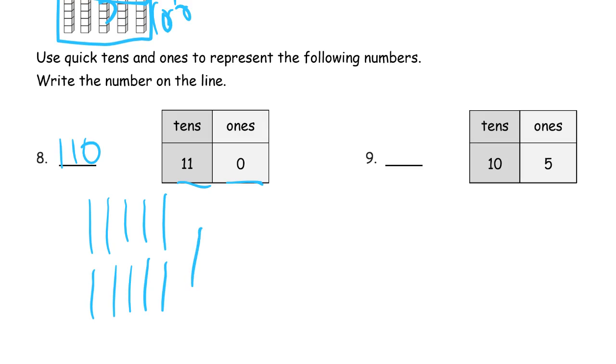And here we have 10 tens and five ones. That's 105. And to draw that in quick tens, it's 10, 20, 30, 40, 50, 60, 70, 80, 90, 100, 101, 102, 103, 104, 105.